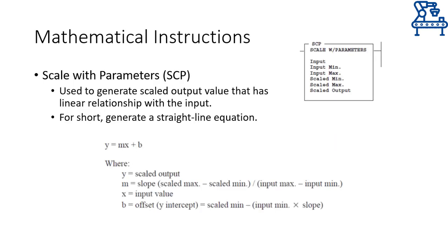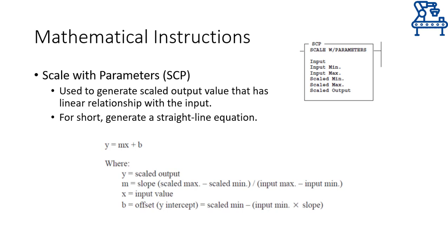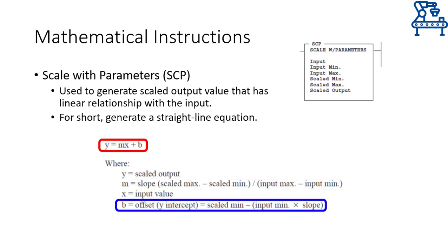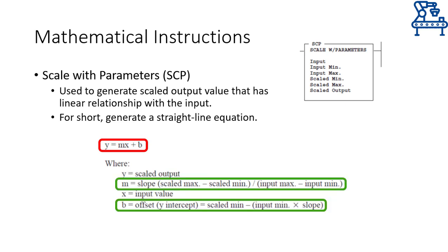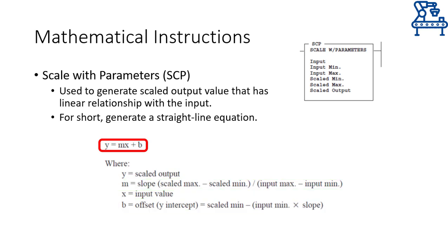Now let's talk about three instructions that require a bit of explaining. The scale with parameters instruction is used to generate output values that have a linear relationship with the input values — in other words, it generates the output of a straight line equation. A straight line equation is generally expressed as y = mx + b, where y is the output, m is the slope, x is the input, and b is the offset or y-intercept. The slope and offset can be determined if any two points on the line are known. Therefore, minimum input, minimum output, maximum input, and maximum output must be provided to this instruction. After calculation of the gradient and offset, the input value x can be used to calculate the output value y.